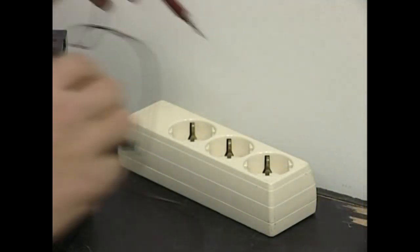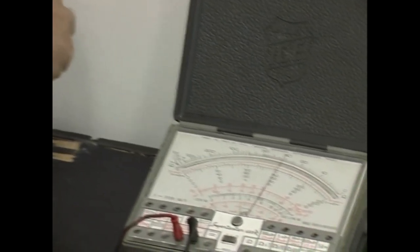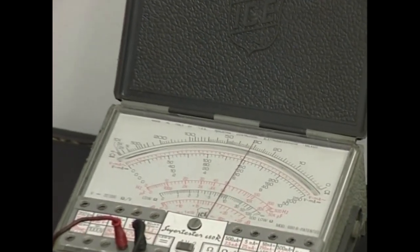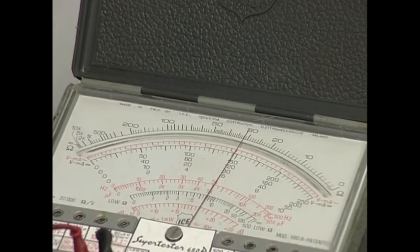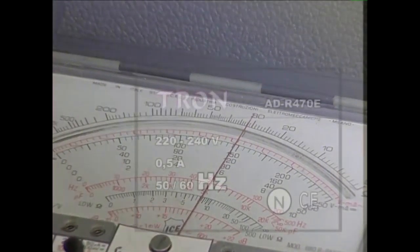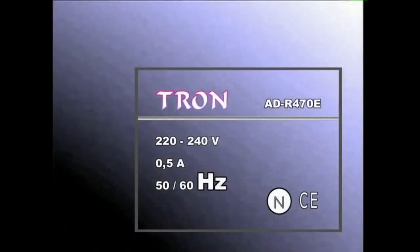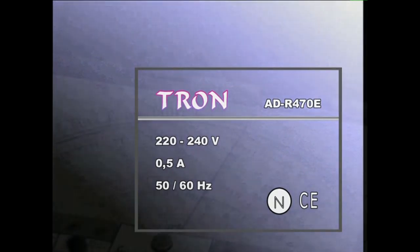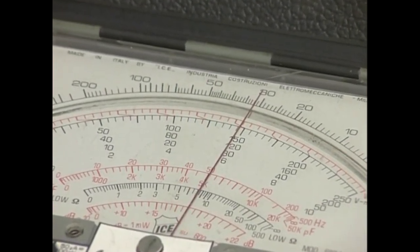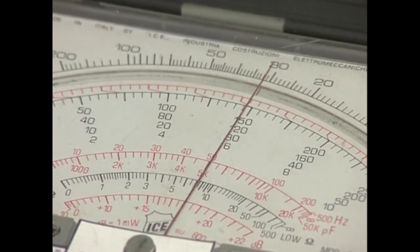Sarearen maiztasunak korronteak segundoko zenbat oszilazio egiten duen adierazten du. Hertzetan neurtzen da, eta tresna elektrikoen ezaugarrien plaketan Hz izkiez adierazten da. Ezaugarri hori korronte alternoz dabiltzan tresnetan bakarrik agertzen da. Izan ere, maiztasunik gabe ez dago korronte alternorik.